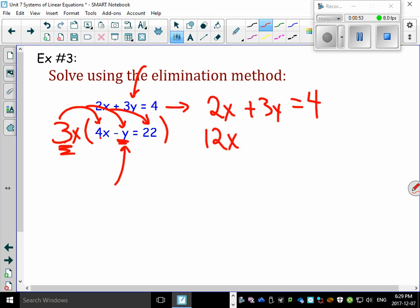3 times minus y, check it. Look at that. This is positive 3y. This is minus 3y. And guess what? They're going to eliminate. But don't forget, I've got to keep going. 3 times 22 gives me 66.